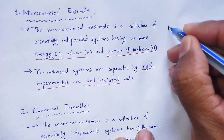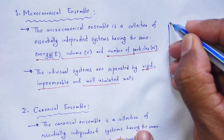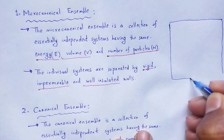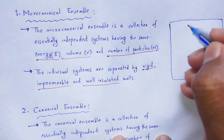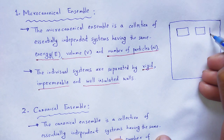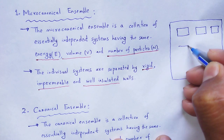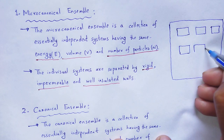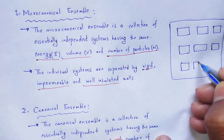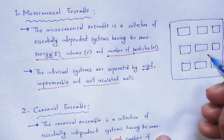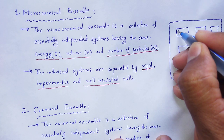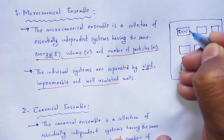Let us take an ensemble which is the collection of large number of systems. These are the systems, and each system has the macroscopic properties — energy, volume and number of particles — energy, volume and number of particles are same.